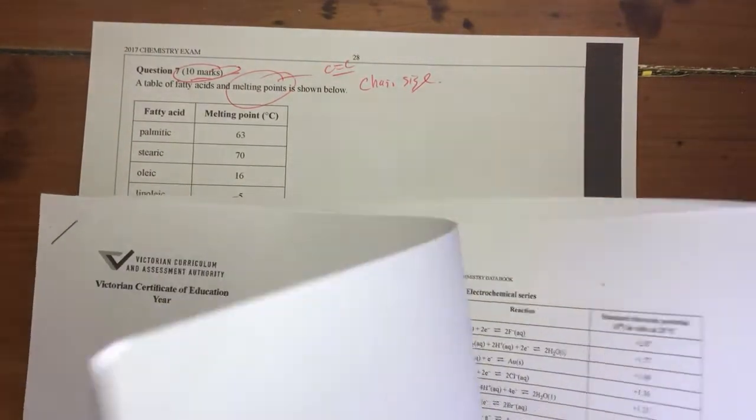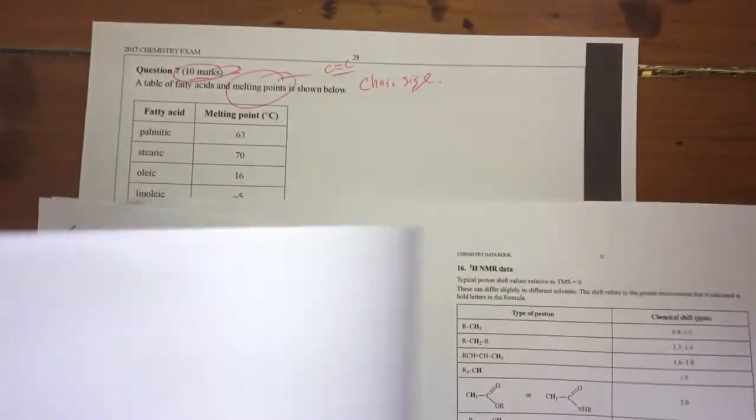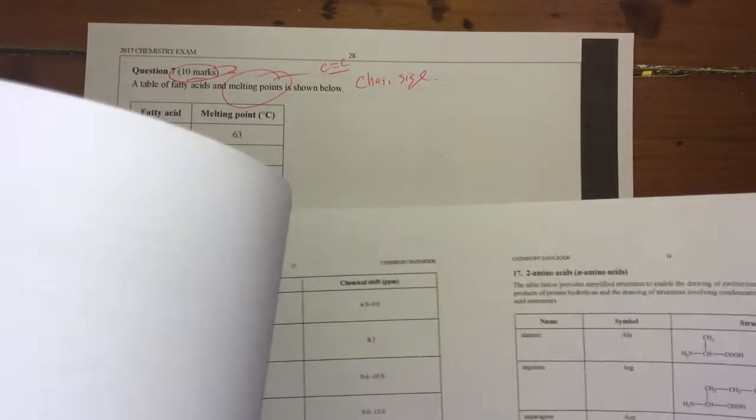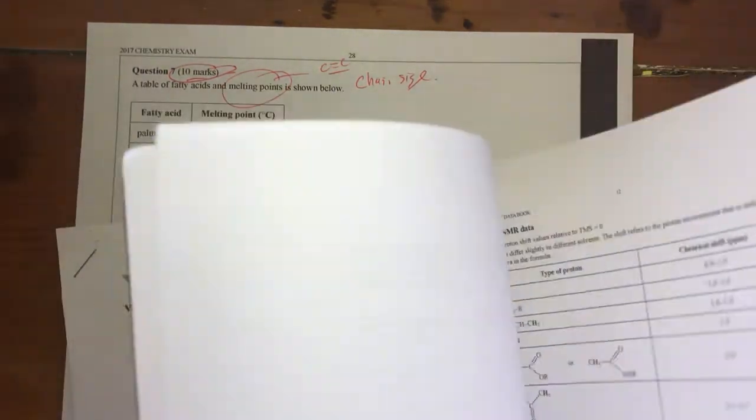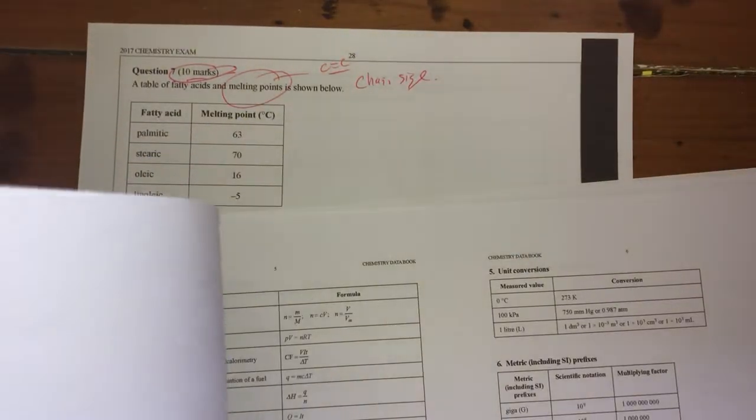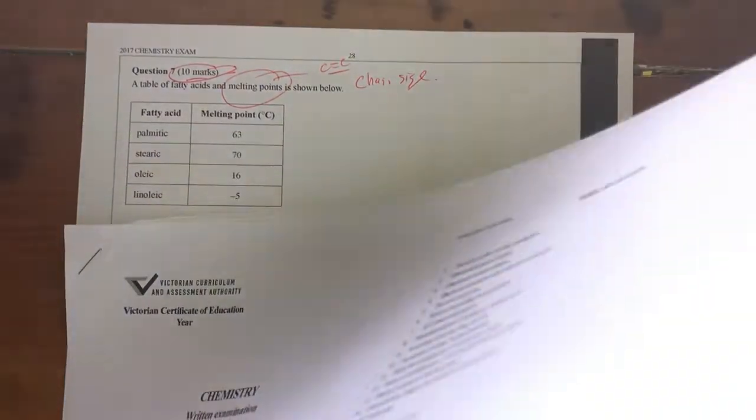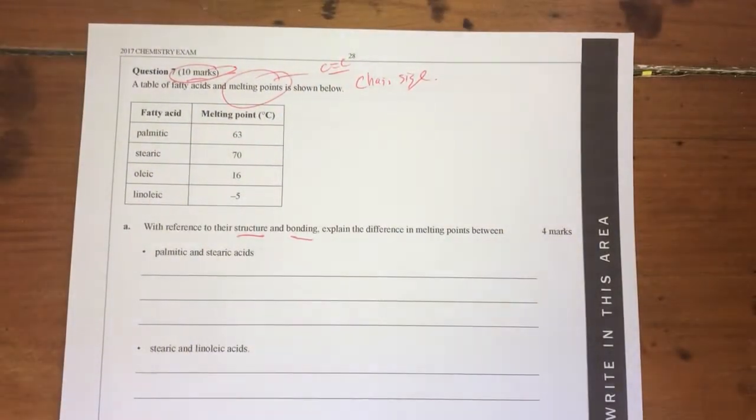Let's find our fatty acids. They're not there. I'll just find these ones, it's hard to find. Probably should look at the index really, shouldn't I? There they are. Here are my fatty acids.